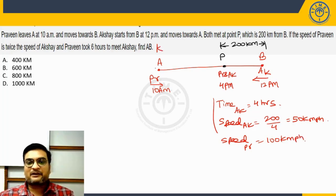And it is already given that Praveen takes 6 hours to travel to the meeting point P. So in 6 hours, can I say distance travelled by Praveen will be 100 into 6 which is 600 kilometers.